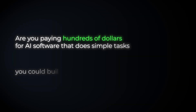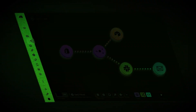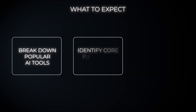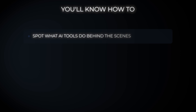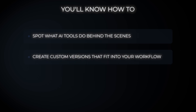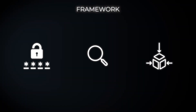Are you paying hundreds of dollars for AI software that does simple tasks you could build yourself? Imagine being able to look at any AI tool, strip away the fancy interface, and build the exact same thing into your existing workflow. In today's video I'm going to show you how to break down popular AI tools, identify their core functions, and rebuild them with no-code automation. By the end you'll know exactly how to spot what these tools are really doing behind the scenes and create your own custom versions. I'll share the exact framework I use to analyze, decode, and rebuild any AI tool's functionality.